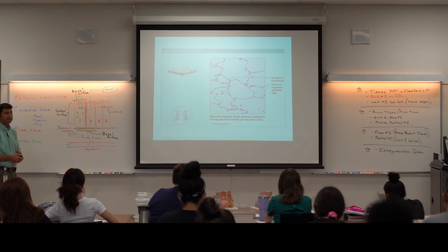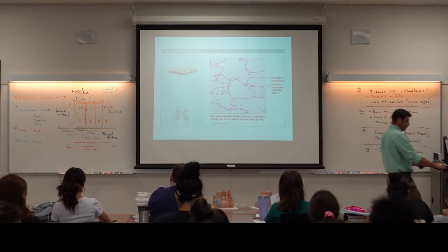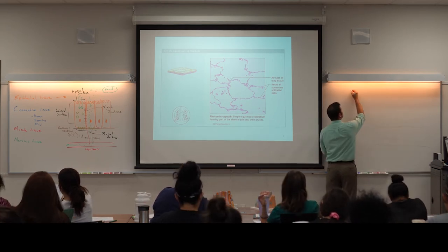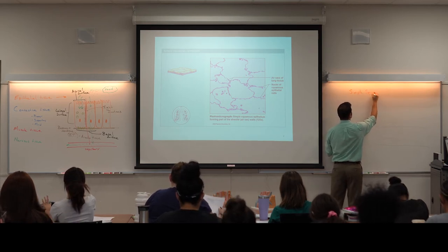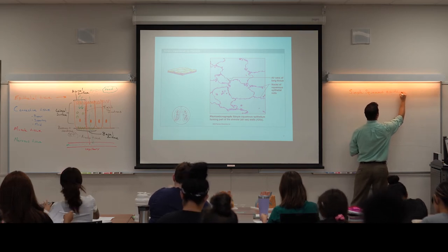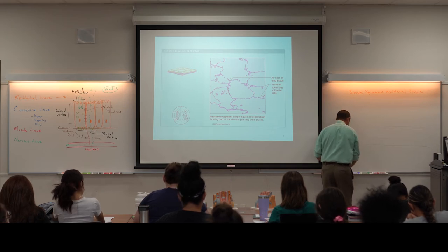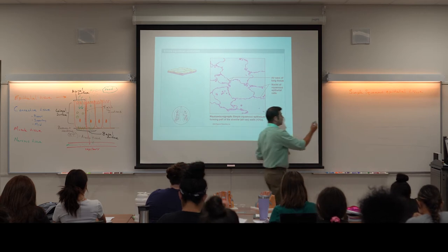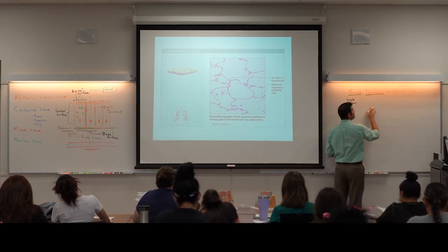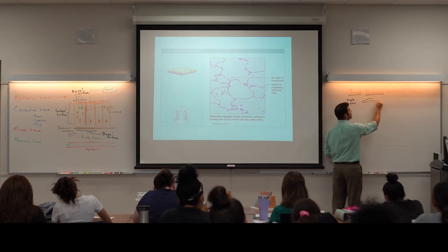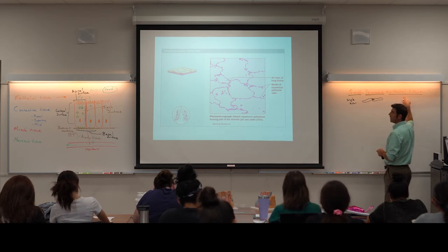The first example on the lab list is simple squamous epithelial tissue. 'Simple' just tells us there's a single layer. 'Squamous' refers to the flat pancake-shaped cell type. The image we're looking at is through the alveoli of the lungs — at the very ends of the lung pockets there are single layers of squamous-shaped cells. Being flat with lots of surface area and not much volume makes it easy for things to diffuse across a single layer. We typically see these in areas where diffusion takes place.